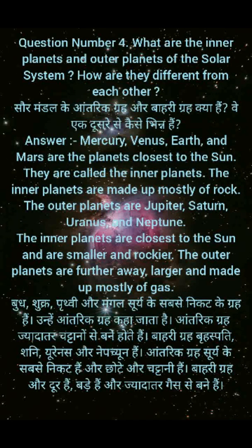Question No. 4: What are the inner planets and outer planets of the solar system? How are they different from each other? Sol mandal ke antarik grah aur bahaari grah kya hain? Vey ek doosre se kaise bhinn hain? Answer: Mercury, Venus, Earth, and Mars are the planets closest to the sun. They are called the inner planets. The inner planets are made up mostly of rock. The outer planets are Jupiter, Saturn, Uranus, and Neptune. The inner planets are closest to the sun and are smaller and rockier. The outer planets are further away, larger and made up mostly of gas. Budh, Shukra, Prithvi aur Mangal, Surya ke sabse nikat ke grah hain. Unhye antarik grah kaha jata hai. Antarik grah jyada tar chatanon se bane hote hain. Bahari grah Brahaspati, Shani, Uranus aur Neptune hain. Antarik grah Surya ke sabse nikat hain aur chote aur chatani hain. Bahari grah aur door hain, bade hain aur jyada tar gas se bane hain.